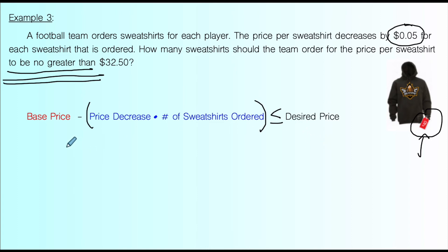Now let's start filling in some numbers here. The sweatshirt base price is $40. And the price decrease is 5 cents multiplied by, I'm going to use N for number of sweatshirts. We don't know how many sweatshirts we're going to order. And it needs to be less than or equal to our target price, our desired price. We don't want to spend more than $32.50 per sweatshirt. So let me just clean this up, write it a little bit nicer. Here's our inequality.